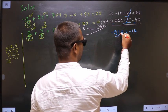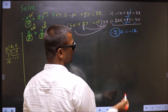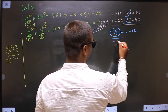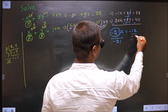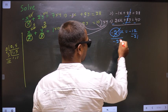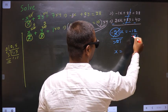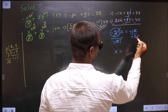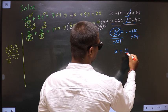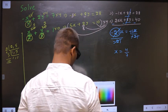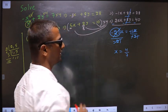So now to get x, I should remove this -21. For that divide by -21. So this cancels out, I get x equal to 4/7. Clear? Now.